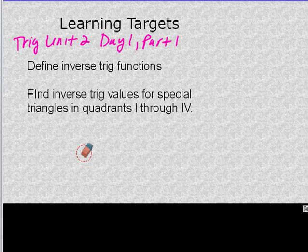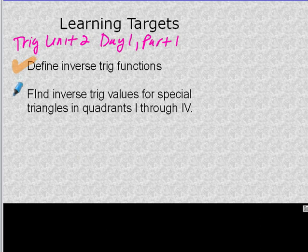Today we're starting trig unit 2, which is about inverse trig functions. Trig unit 1 was about finding trig ratios based on an angle. Inverse functions give you the ratio and you have to find out what angle has that ratio for that particular trig function. Today is day 1 part 1 — we're going to figure out what inverse trig functions are, and then find them for the special triangles in quadrants 1 through 4.